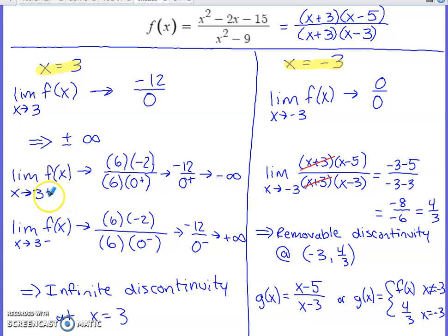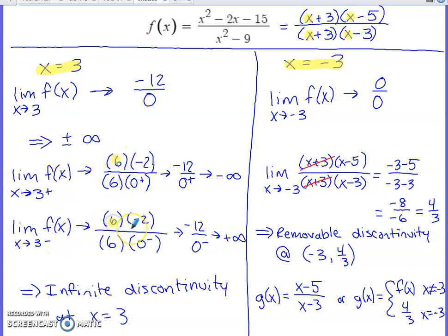Checking the limit from the right side of three using the factored form of the function: three plus three is six, which is positive whether we're slightly above or below three. Three minus five is negative two, and we need to know that's negative. In the denominator, three plus three is six — positive. The critical factor is x minus three, where three minus three is zero, and we must carefully consider the sign based on one-sidedness.